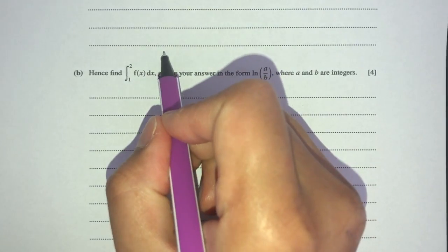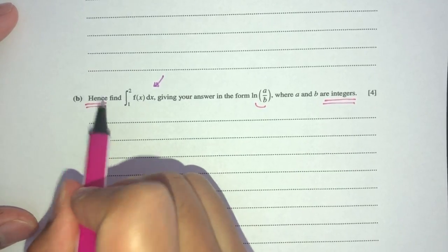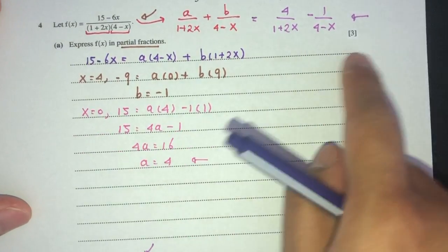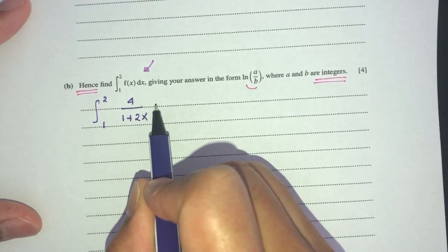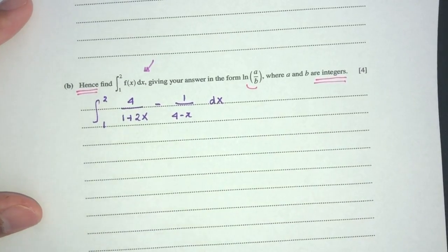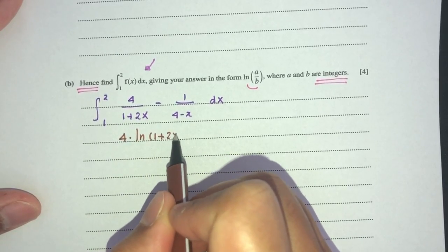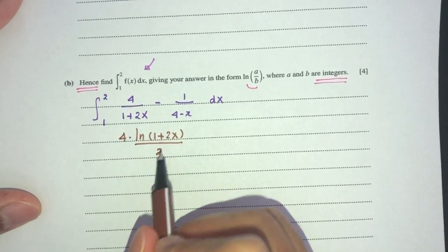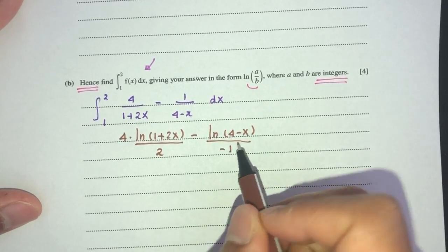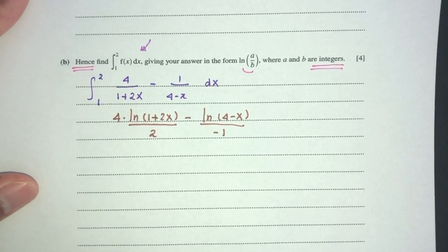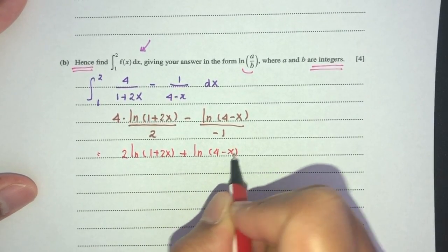For part b, find the exact value of the definite integral using the partial fractions from part a. Since f(x) = 4/(1 + 2x) − 1/(4 − x), the integral becomes: ∫[1 to 2] [4/(1 + 2x) − 1/(4 − x)] dx = [2·ln|1 + 2x| + ln|4 − x|] evaluated from 1 to 2.